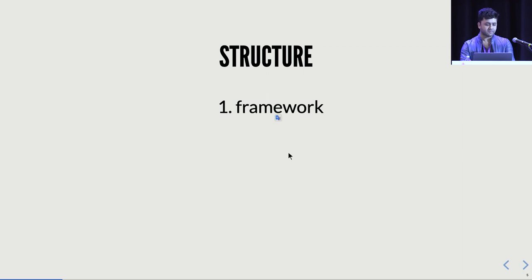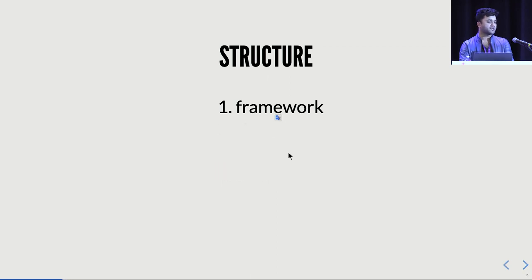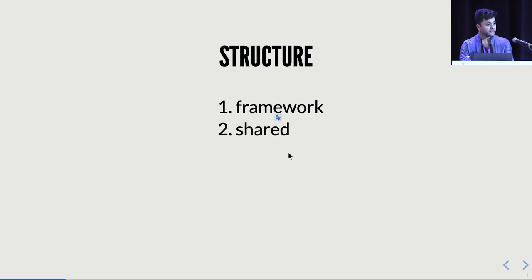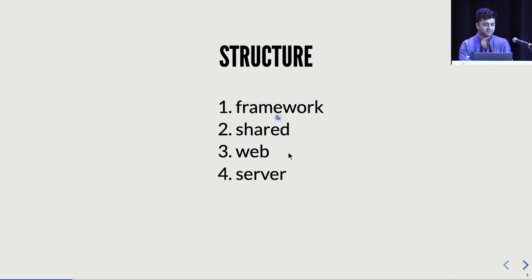One way to think about structuring such a web application is into four components. First is the framework — the part you can imagine reusing across different projects. Second is the shared module, where you share your validation logic and model classes between front-end and back-end. Third is the web part — your Scala JS and Scala CSS. Fourth is your server, which serves your static assets like HTML and JavaScript, and serves your data or has business logic.